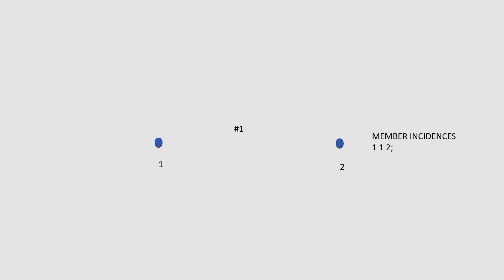The position of members is determined by the position of the nodes, since nodes represent the end points of the member. An important aspect to understand is the start and end of the members. For member 1, defined between nodes 1 and 2, the member incidences would be: 1 for member number 1, then 1 for node 1, then 2 for node 2. Node 1 is the start node and node 2 is the end node. From a geometry perspective, it makes no difference if member 1 is defined as node 2 to node 1 instead of node 1 to node 2.